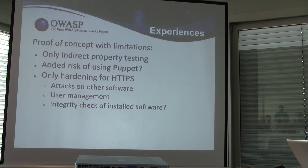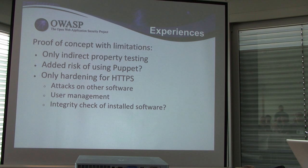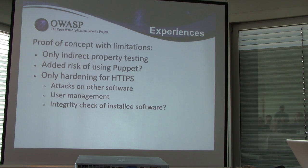There are some limitations with what we've shown: we only focused on getting HTTPS right, not the whole web server setup stack. We didn't look at other security properties. We also didn't look at the added risk of adding Puppet to your configuration, since it can be used for remote management and adds risk too. One important point: for testing against these attacks, we didn't directly test for the attacks themselves. We tested indirect properties — for example, we know BEAST is bad if CBC mode is enabled in TLS below 1.1, so we test whether those ciphers are available.